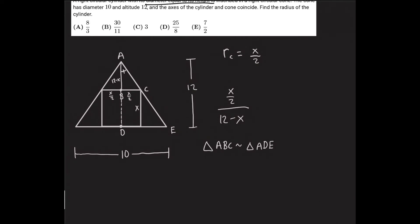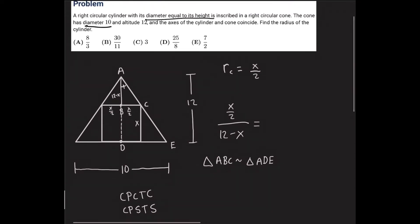From here I can set up a proportion because corresponding parts of similar triangles are proportional. I know that the corresponding lengths will have identical ratios in the two triangles ABC and ADE. So BC divided by AB, or x over 2 divided by 12 minus x, is equal to the radius of the big cone divided by the altitude of the big cone. The radius of the big cone is 5 since the diameter is 10, so this equals 5 divided by 12.